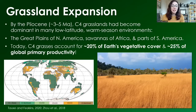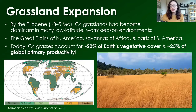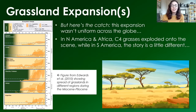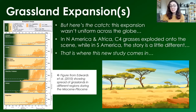Today, C4 grasses account for around 20% of Earth's vegetative cover and 25% of global primary productivity — essentially global photosynthesis. Which is quite a large percentage, coming from pretty much nothing for over 99% of Earth's history. But there's a catch: this expansion of grasslands wasn't uniform across the globe. In North America and Africa, C4 grasses exploded onto the scene, while in South America, the story seems to be a tad different — and this is where this new study comes in.